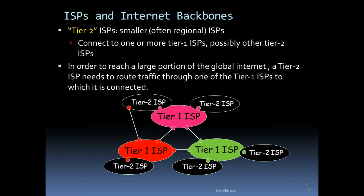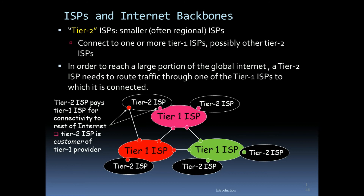To summarize the hierarchy: tier one is global, tier two is country-wide, and tier three is at the city or town level. Tier two ISPs pay tier one ISPs for connectivity to the rest of the internet — tier two is a customer of the tier one provider. Tier two ISPs also peer privately with each other.